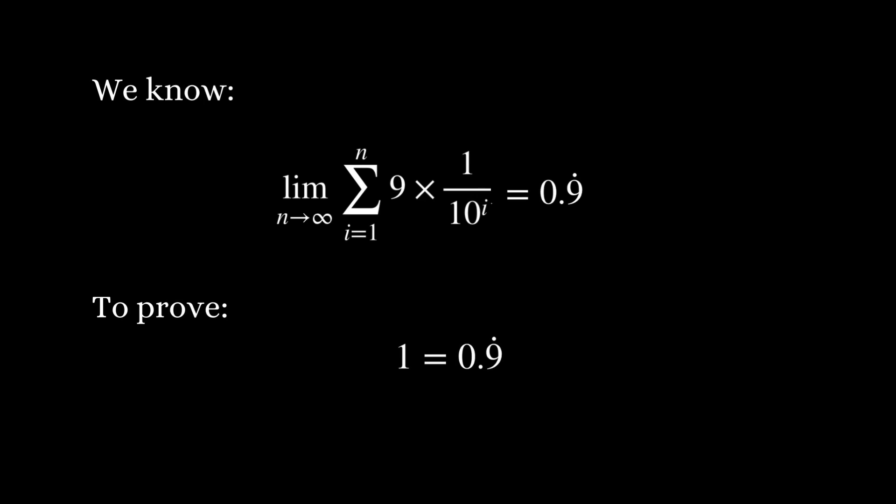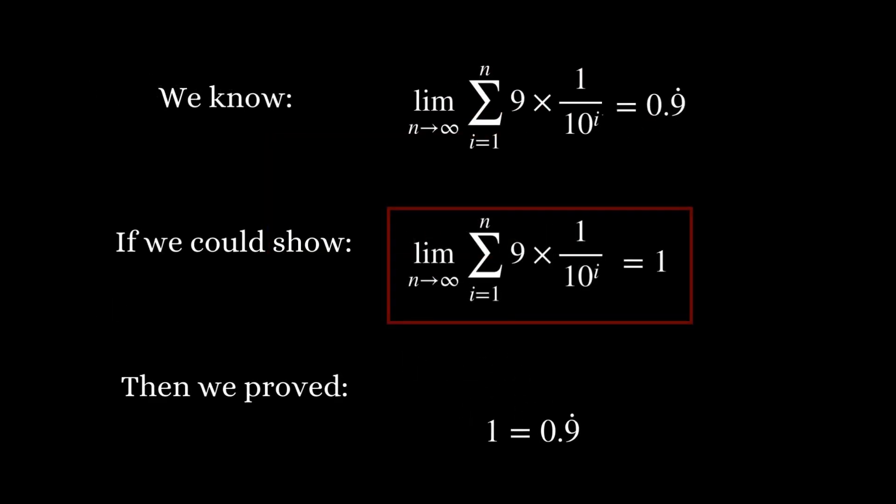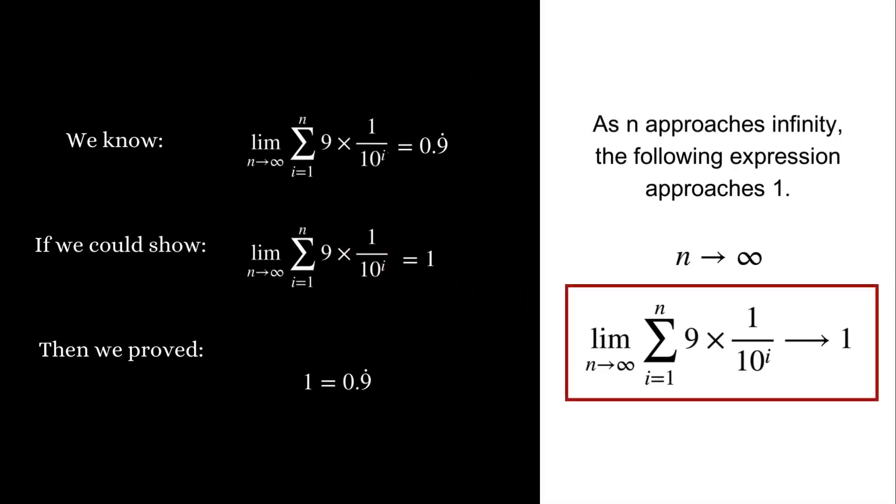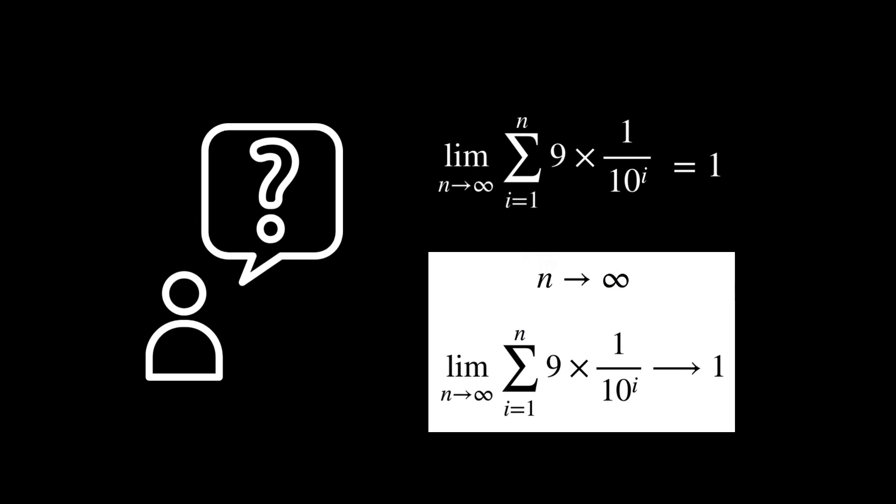Therefore, to show 0.9 recurring equals 1, we need to show that this limit also equals 1, which means that as n approaches infinity, this expression approaches 1. So how do mathematicians prove this claim?